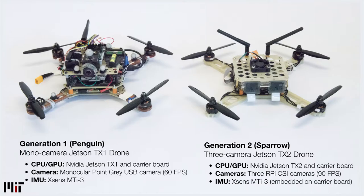For our test platform, we have built two generations of drones, which carry cameras, IMUs, and NVIDIA Jetson CPU-GPUs on a compact, agile platform. The drone on the left is the monocular drone used in experiments shown in this video, while the drone on the right is our next-generation drone, which will be used for development of multi-camera algorithms in the future.